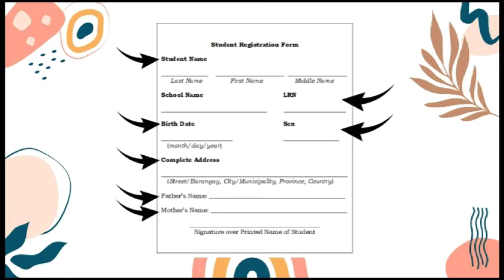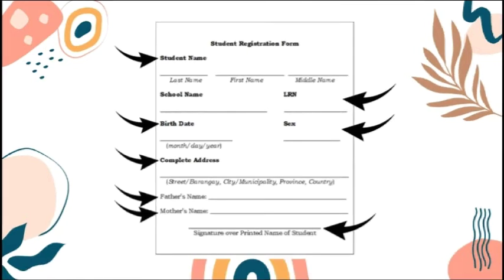The LRN is a 12-digit number assigned by the Department of Education to each student as he or she goes through the basic education program — from Grade 1 through Grade 12. Lastly, never forget the signature over the printed name, which should be written in all capital letters. The format of the student registration form varies depending on the school.